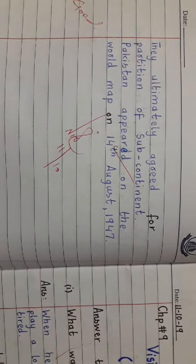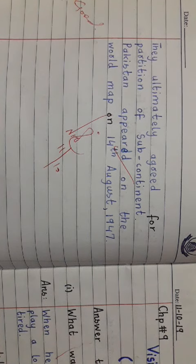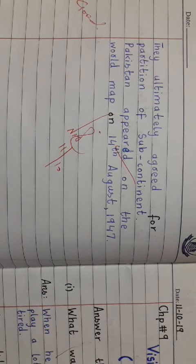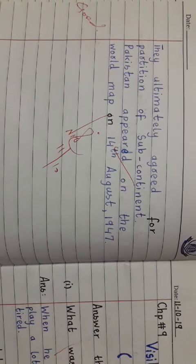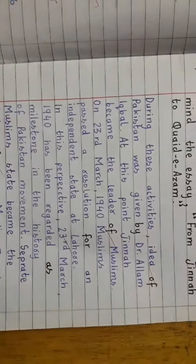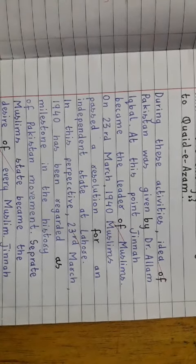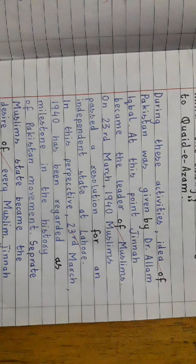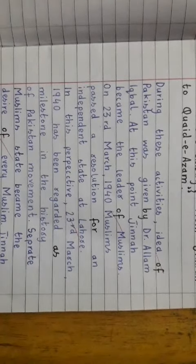A separate Muslim state became the desire of every Muslim. Jinnah led his movement despite strong opposition of Hindus and British. They ultimately agreed for the partition of the subcontinent. Pakistan appeared on the world map on 14th August 1947. All the words denoted in black are the missing words which you have to choose from the lesson and fill them in.